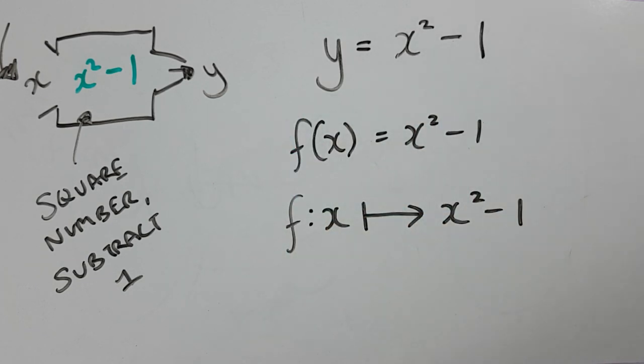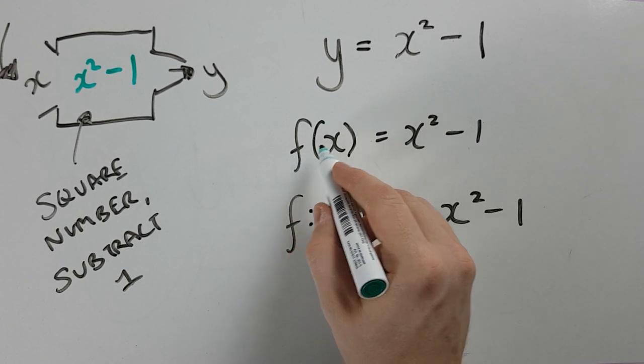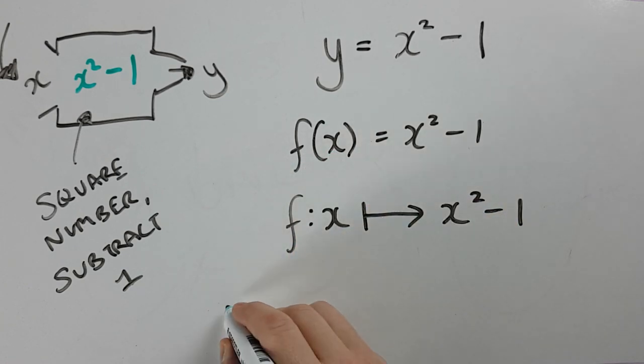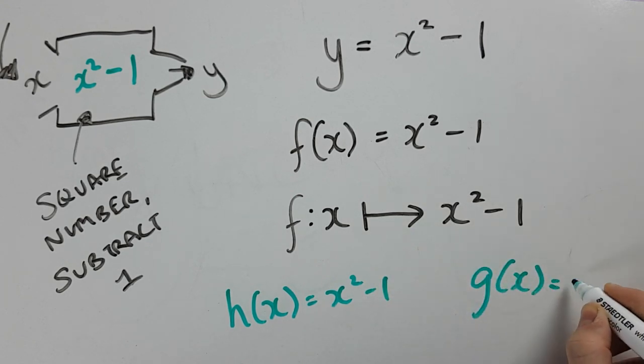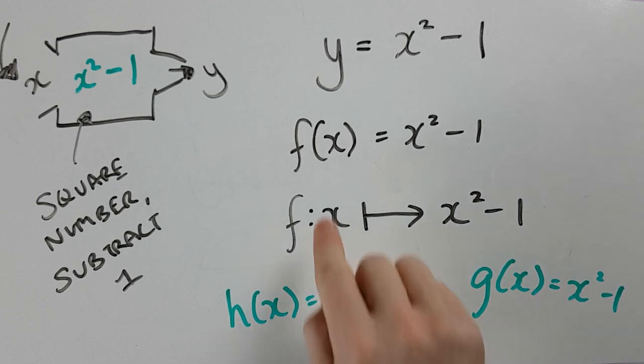And just on that, to see it, I could have, instead of saying f of X, I could have said H of X. I could have said G of X. So on, so forth. It doesn't really matter the letter in front. That's just identifying which function it is. We generally go for F and actually G and H as well.